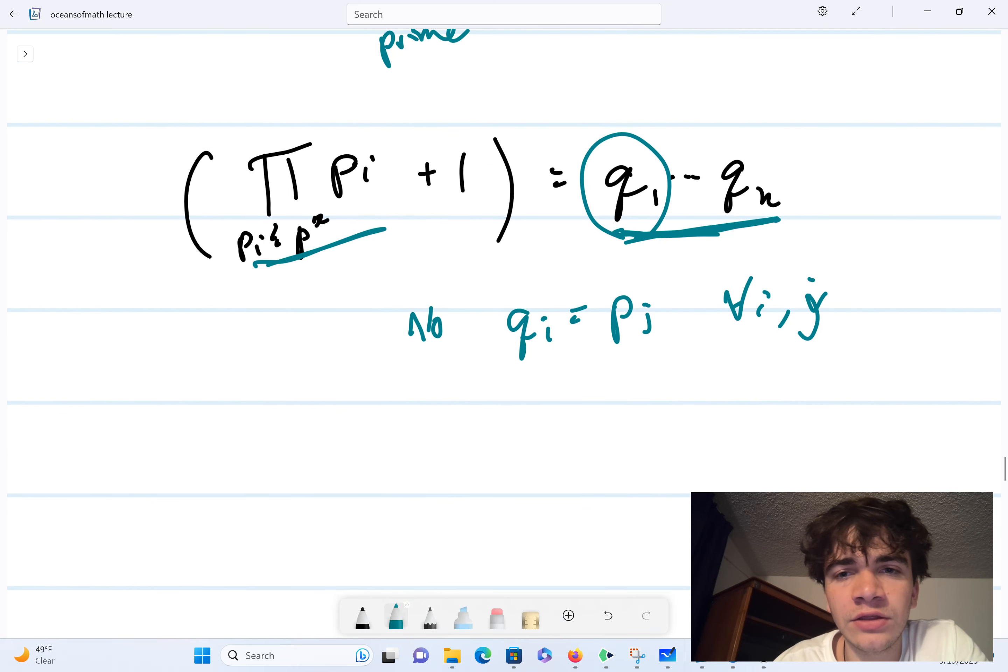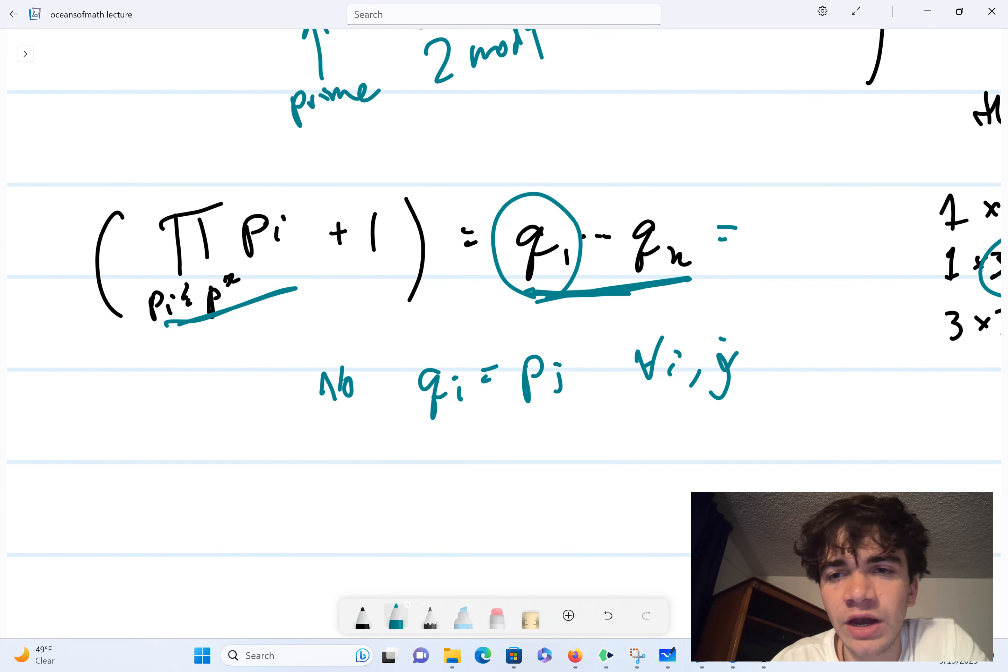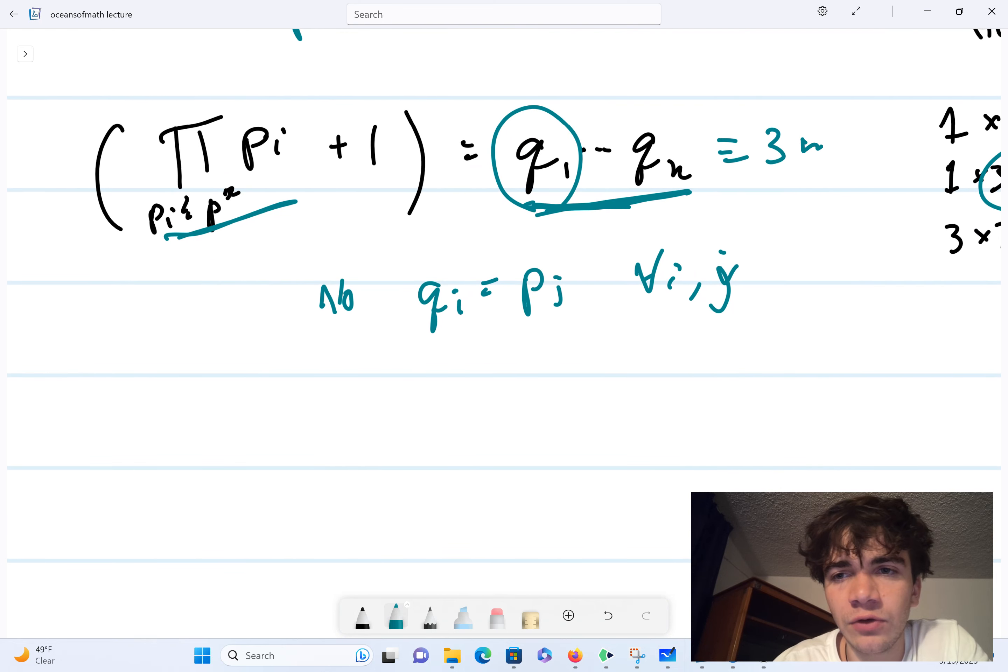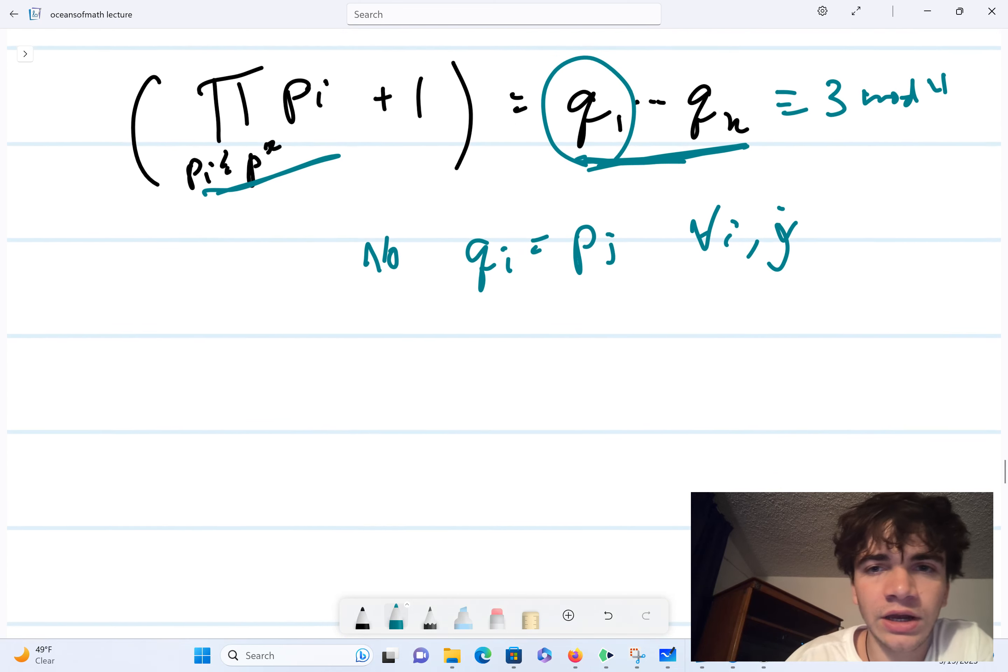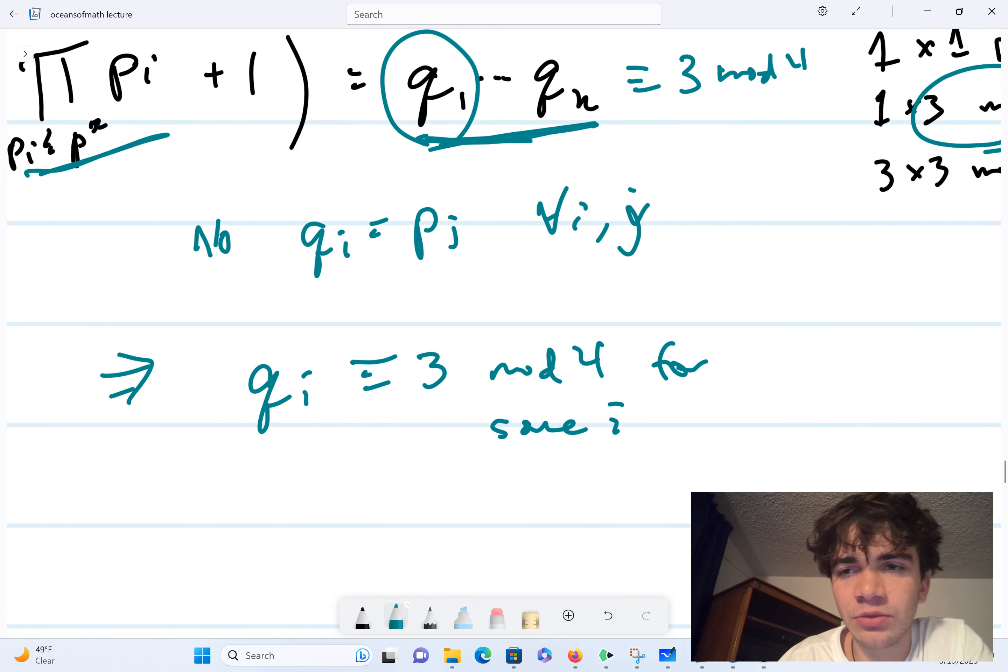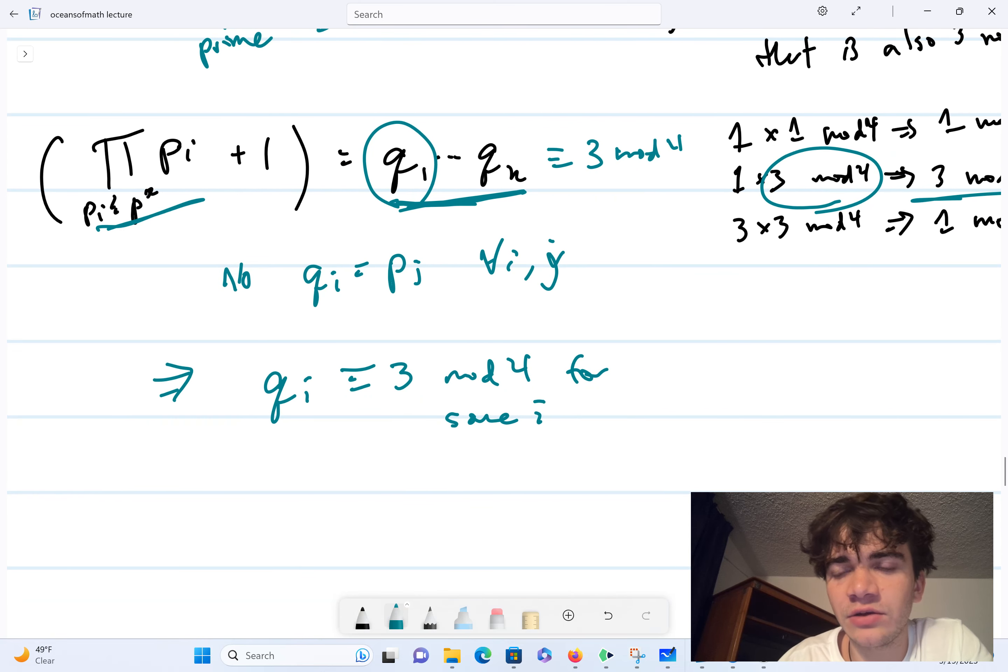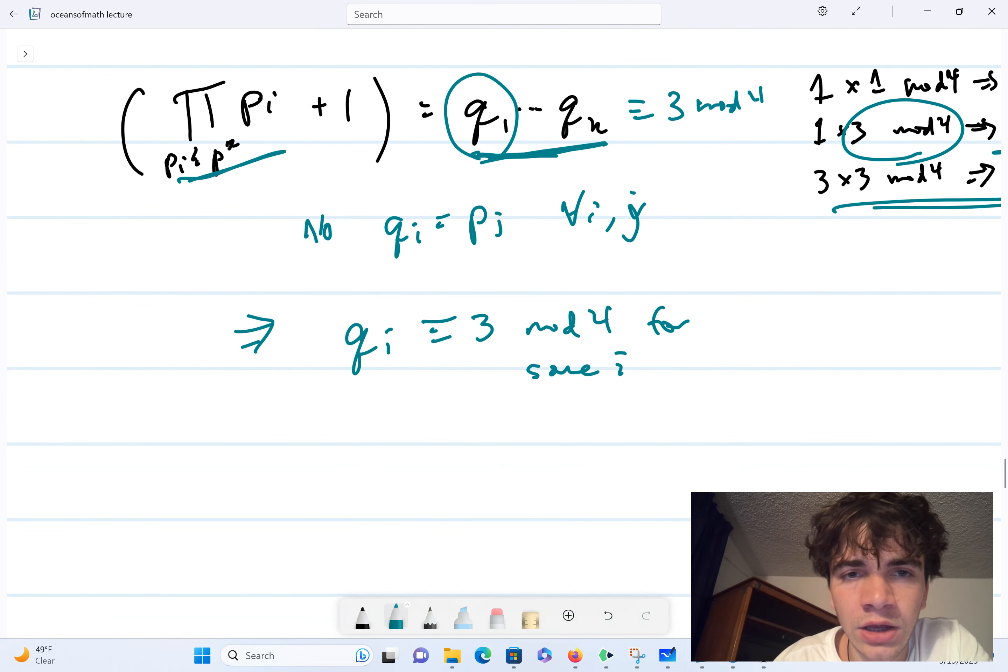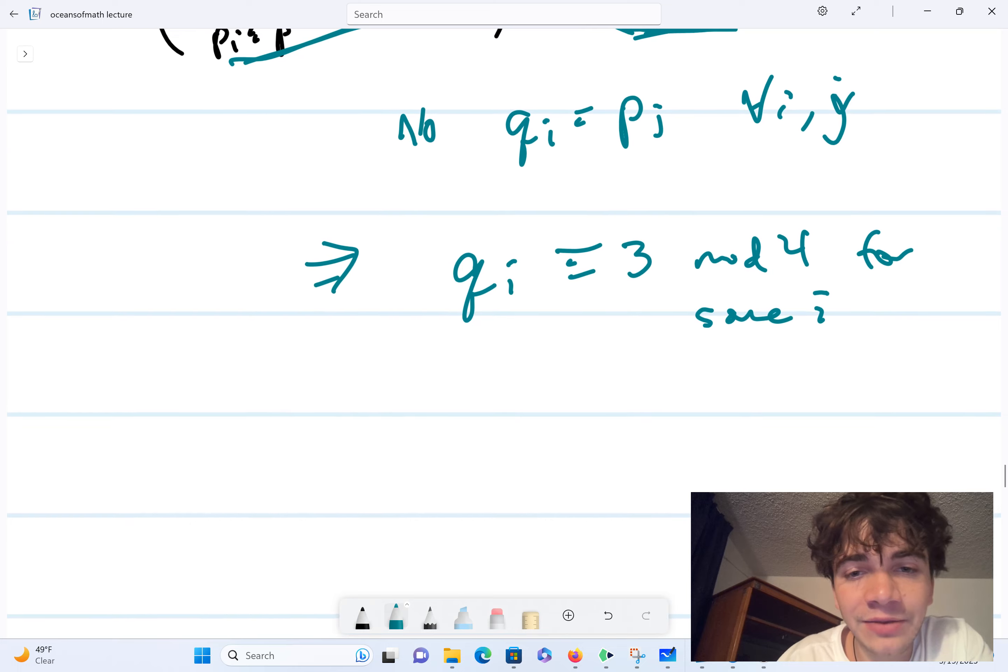So since all the q sub i's are distinct from all the p sub i's, we know that one of these q sub i's is equivalent to 3 mod 4. So we have that q sub i is equivalent to 3 mod 4 for some i, and that's just based on the previous kind of analysis that I did with modular multiplication, is we have to have a prime factor that's equivalent to 3 mod 4, and that prime factor can't be equal, q_i cannot be within S, right?